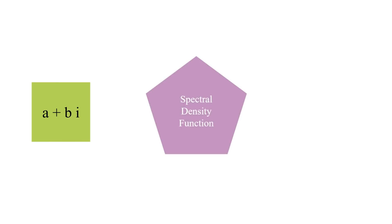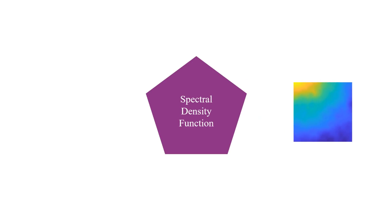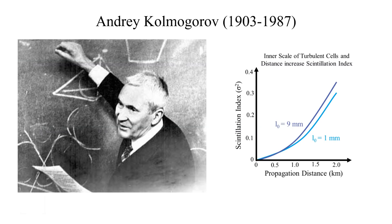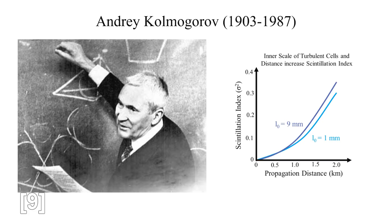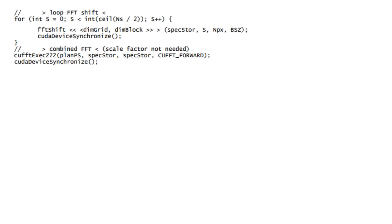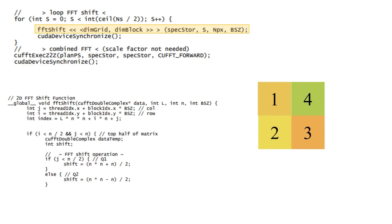To create a phase screen, we begin with an array of complex random numbers and then feed these through a spectral density function. Such functions have been determined experimentally over years of atmospheric testing, typically giving more scintillation at lower altitudes and then less as we get higher. The one used in CASPer is the Kolmogorov function, named for its inventor and Soviet mathematician Andrei Kolmogorov. A fundamental part of this operation is to complete a fast Fourier transform, which converts our signal into the frequency domain. This also requires a shift operation to move the zero frequency components into the center of the array. To complete the shift, we begin by calling a global GPU function, which I've appropriately called FFT shift. The FFT shift operation switches the second and fourth quartiles, and then the first and the third.